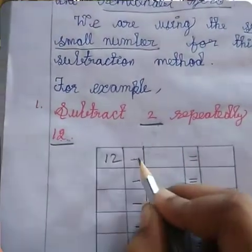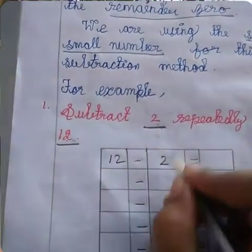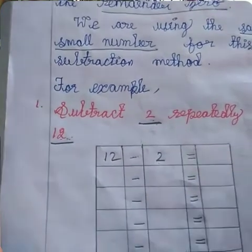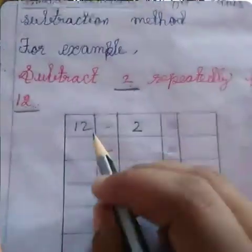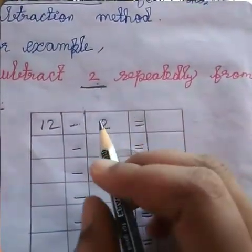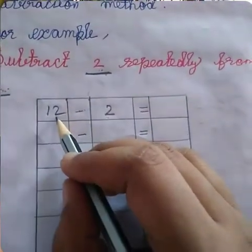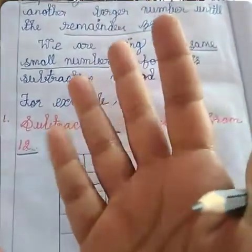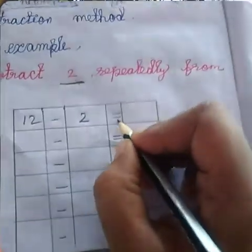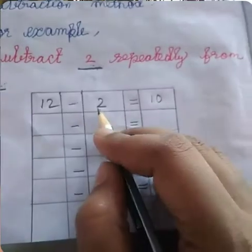Then minus — you are going to repeatedly subtract the small number 2, so put 2 in the third column. 12 minus 2: first find the small number in these two numbers — 12 and 2, which one is small? 2 is small. Keep 2 in your mind and tell the next numbers from 2 until you get 12: 3, 4, 5, 6, 7, 8, 9, 10. How many fingers? 10 fingers. Write the equal sign and write 10 in the last box. The remaining of 12 minus 2 is 10.